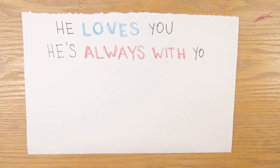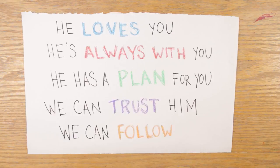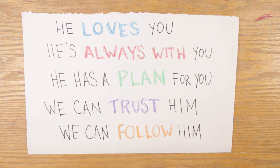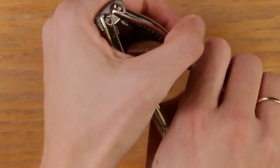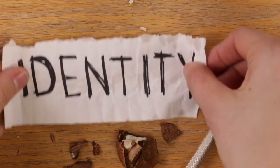He's always with you, and he has a plan for you, because you're his kid. We all are. So we can trust him and follow him wherever he wants to take us. And that, in a nutshell, is identity.